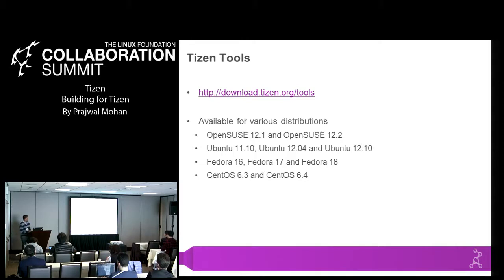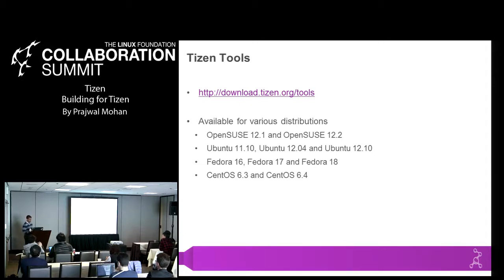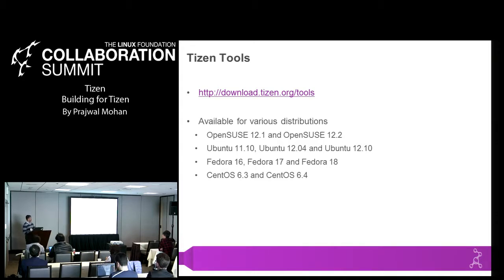Before I talk more about the Tizen tools — all the tools are available on download.tizen.org/tools and we have these tools available for various distributions like OpenSUSE, Ubuntu, Fedora, and CentOS. Whatever your distribution of choice, you probably have binaries available so you can add it to your apt, yum, or zypper repos and install the Tizen tools. We also have sources for all of the tools, so if your distribution is not one of these, you should still be able to get the sources and compile them yourself.